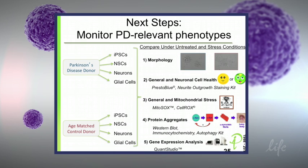As next steps, we want to monitor Parkinson's-relevant phenotypes from the Parkinson's disease donors compared to matched control donors and also the derived isogenic lines with TALEN. We want to look at neural stem cells, neurons, and glial populations for cellular and molecular phenotypes using the wide plethora of tools from Life — general neural health, mitochondrial stress, protein aggregates, and autophagy as a big disease mechanism of interest, as well as gene expression tools from Life.